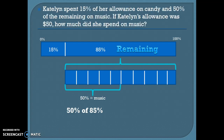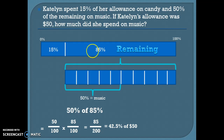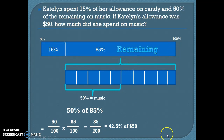This next one is similar. Caitlin spent 15% of her allowance on candy, leaving 85% of her original amount. Of that, she spent 50% on music. We already figured out that 50% of 85% is 42.5%. Our word problem also tells us she had $50 to start with. So we're going to find 42.5% of $50, and we find that she spent $21.25 on music.